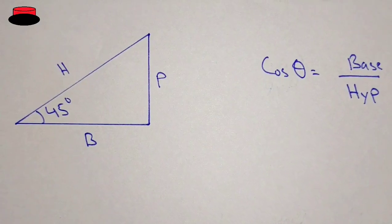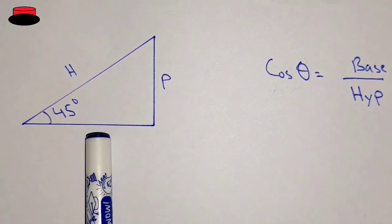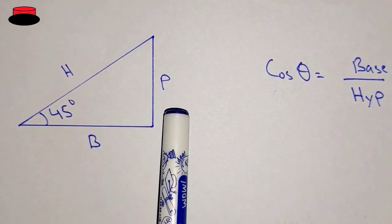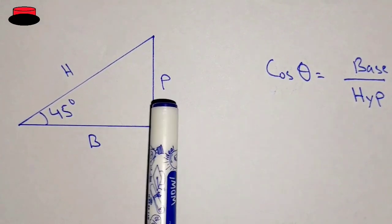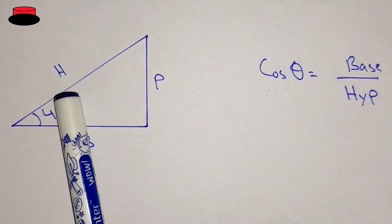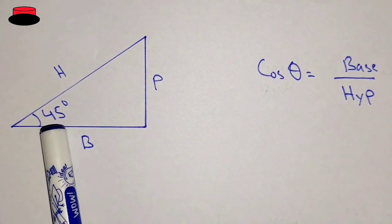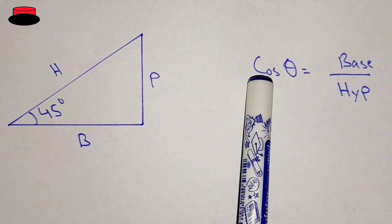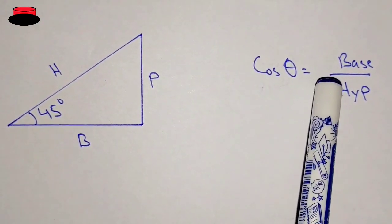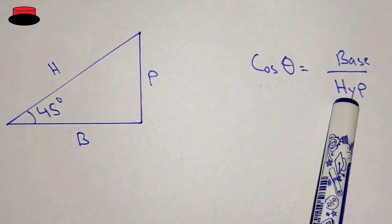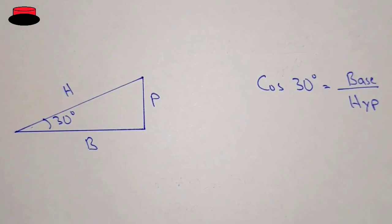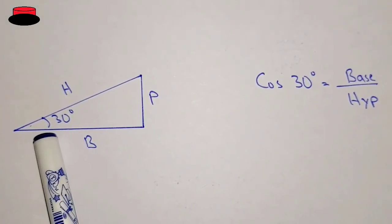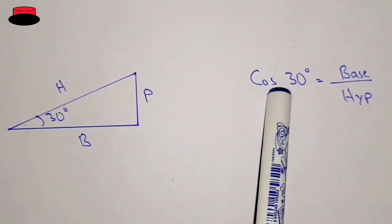Here we have a right angle triangle. We know that this is the base, this is the perpendicular, and this is the hypotenuse. Let's suppose this is a 45-degree angle. Cosine theta is equal to base over hypotenuse. Now here the angle is 30 degrees, so cosine 30 degrees equals base over hypotenuse.